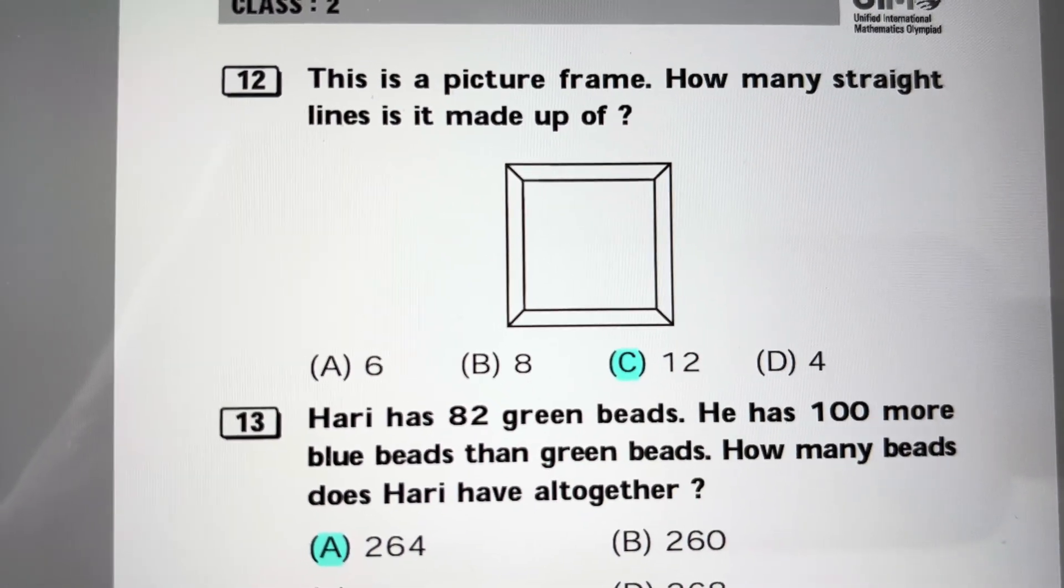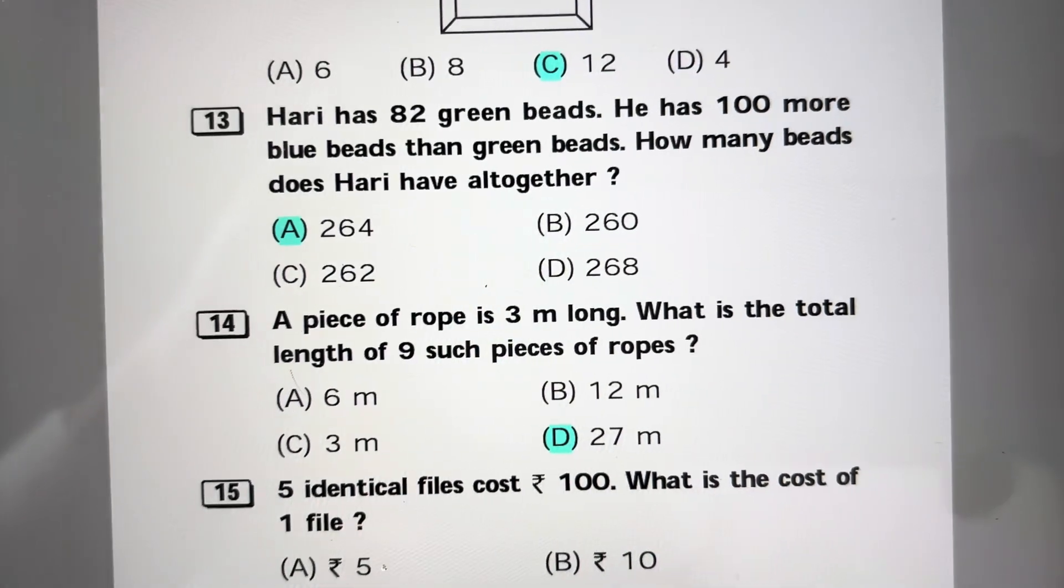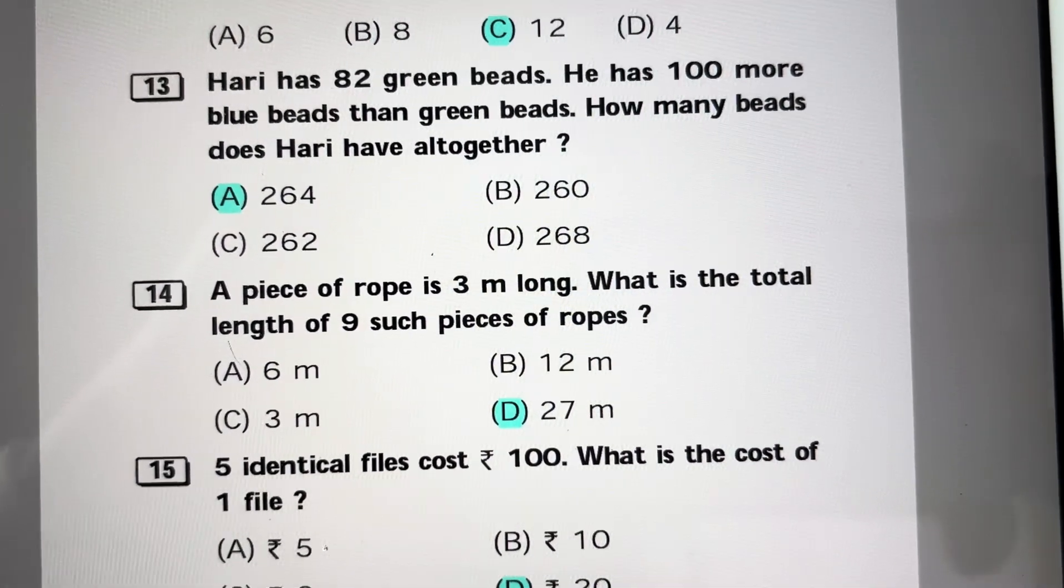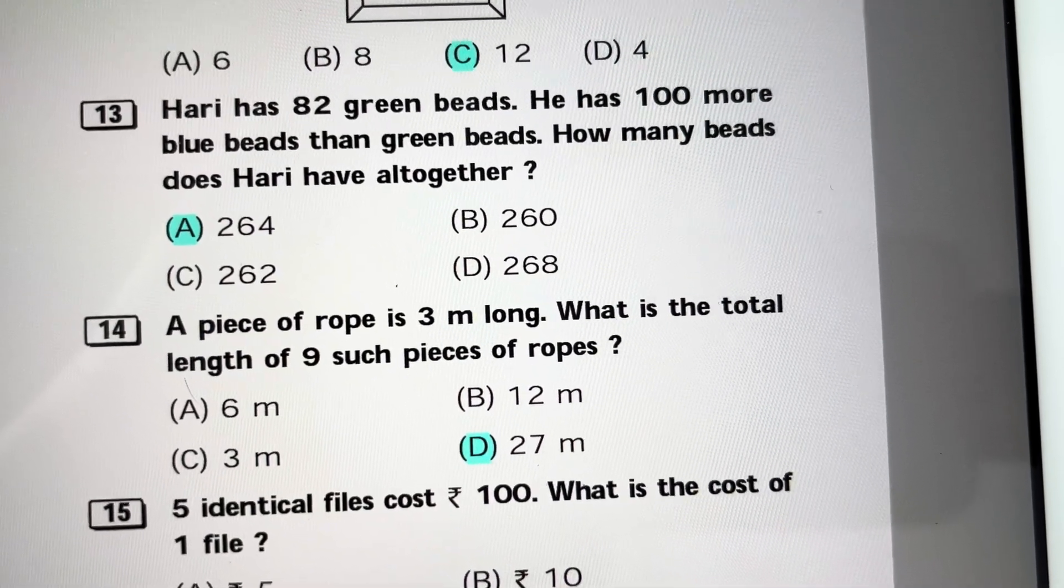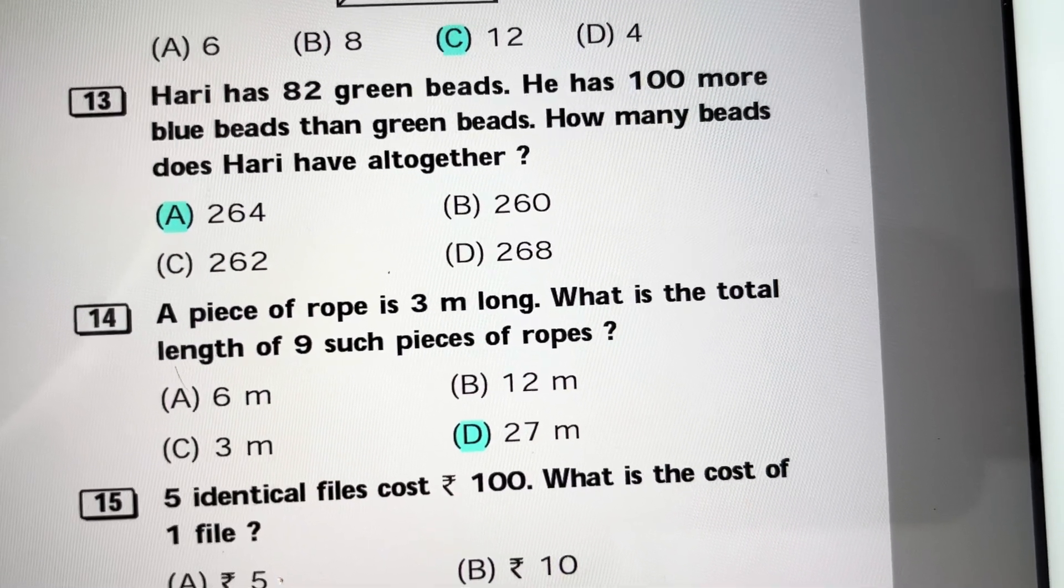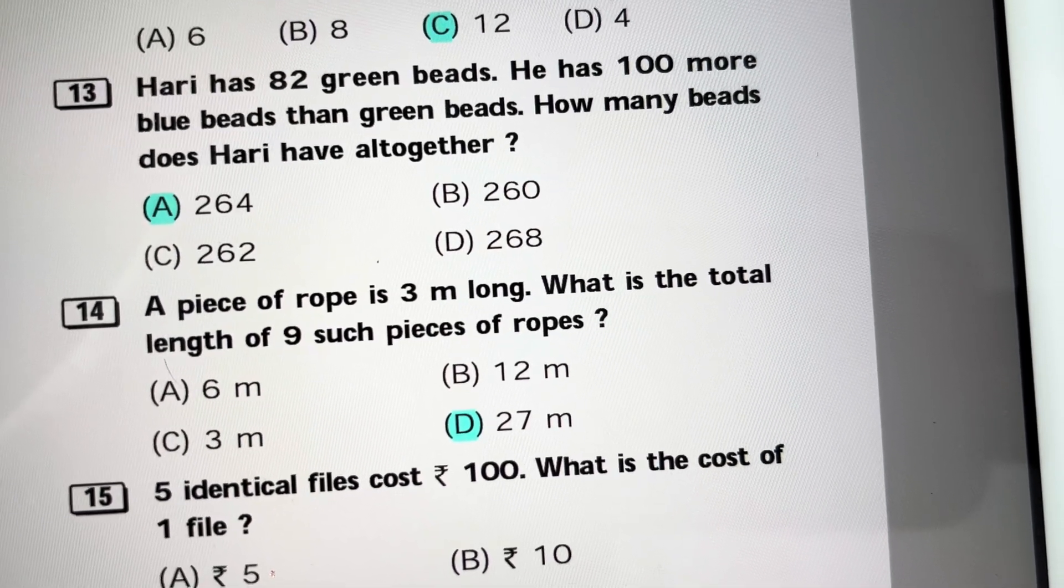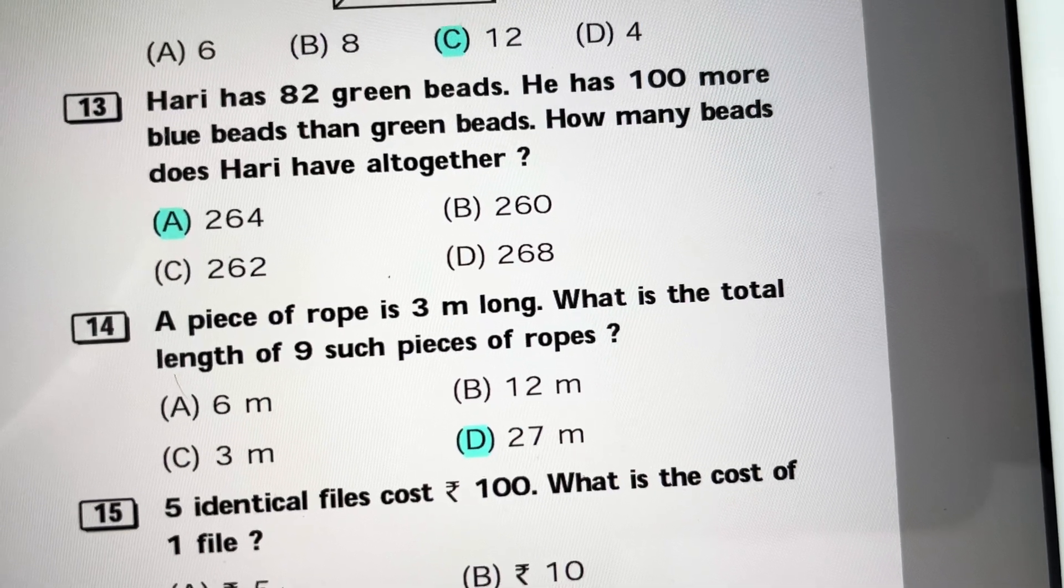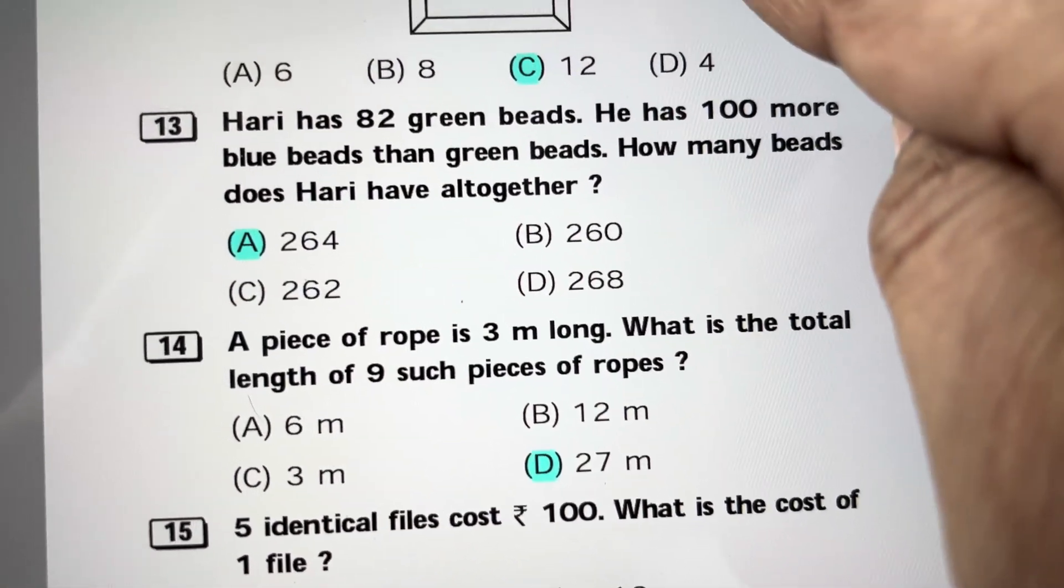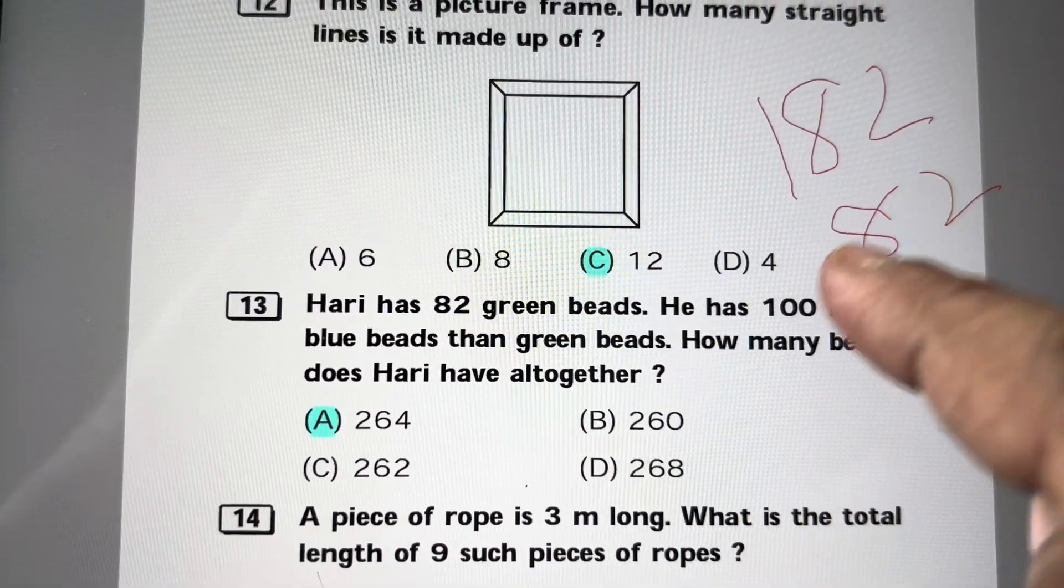Hari has 82 green beads and he has 100 more blue beads than green beads. How many beads does Hari have altogether? Number of blue beads is 182, so 182 plus 82 is 264. Answer is A, 264.